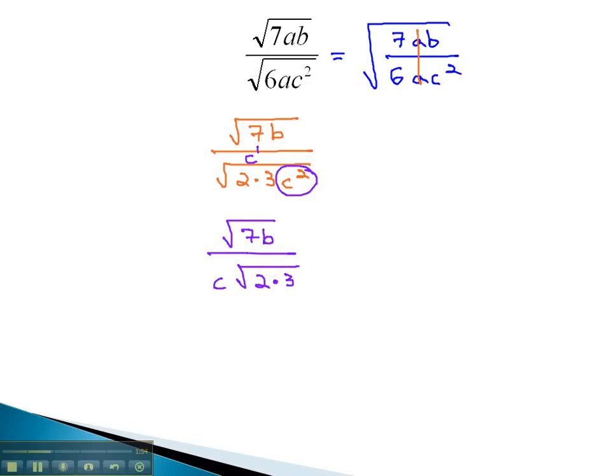Now we are ready to rationalize this denominator, or get rid of the radical that ended up in our simplified denominator. The way we do this is we multiply by any missing factors under a radical in the denominator.